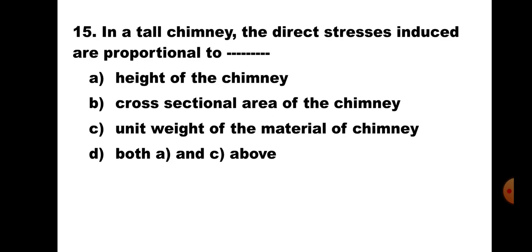Question number 15: In a tall chimney, the direct stresses induced are proportional to A. Height of the chimney, B. Cross sectional area of the chimney, C. Unit weight of material of the chimney, D. Both A and C. The direct stress depends on height of the chimney and also on the unit weight of material, because direct stress equals rho into H. Hence, the correct answer is D. Both A and C.